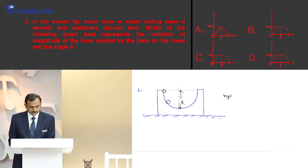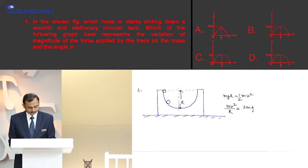So mgr equals half mv squared. Therefore mv squared by r equals 2mg.